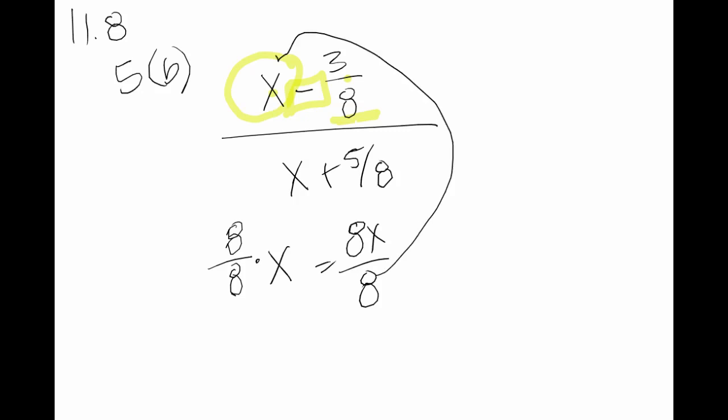So that I can stick that back up into my original equation to get 8x over 8 minus 3 eighths. Now I have two fractions with common denominators. So I can work with that.